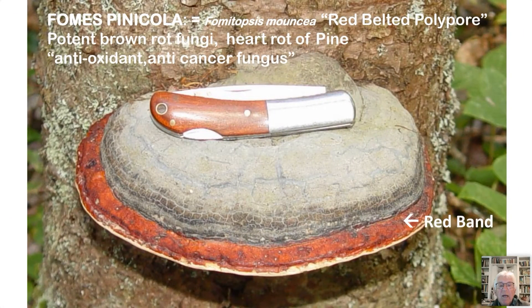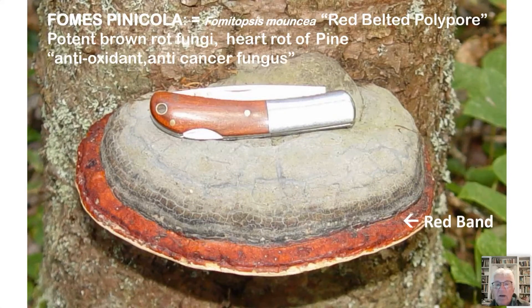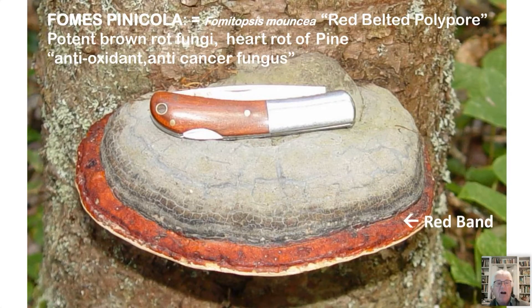This is Fomitopsis pinicola — it has a red band around it. That's Fomitopsis mounceae — named for another mycologist — often called the red-belted polypore. Again, this is a potent brown rot fungus. It causes hard rot of pine and the trees fall over. Up north in Maine or in the Adirondacks, you see just deep, deep layers of that brown duff — this is one of the more potent fungi producing that. It has in the past been used for antioxidant and anti-cancer purposes, but we don't think so anymore.